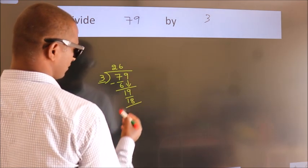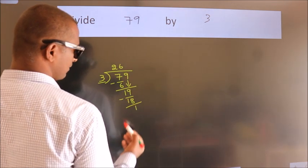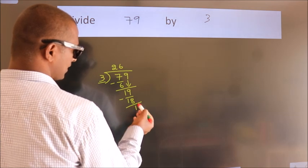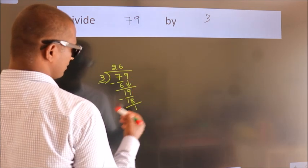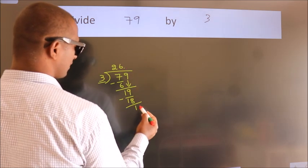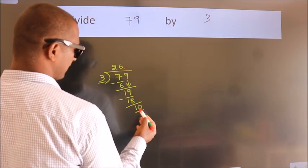Now we subtract, we get 1. After this, no more numbers to bring it down. So what we do is, we put dot, take 0. So 10.